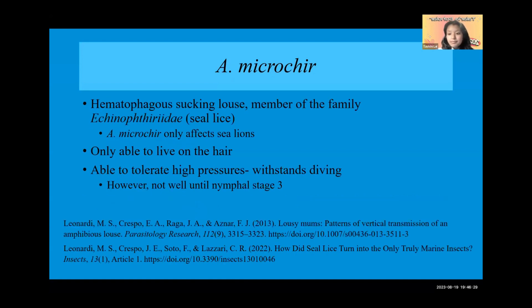Next: Antarctophthirus microchir, a sucking louse. A. microchir is a hematophagic sucking louse and a member of the seal lice family, so these only affect seals and sea lions. A. microchir, however, only affects sea lions and is better known for affecting South American sea lions.